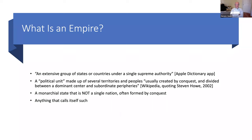Apple's dictionary gave a rather simplified definition. Wikipedia, talking about empires, has this particular quote which sounds more accurate: 'Several territories and people, usually created by conquest, divided between a dominant center and subordinate peripheries.' Then again, it's anything that calls itself an empire, and you will see some odd things here.